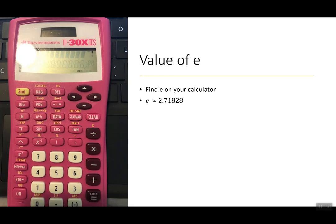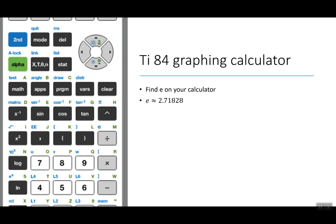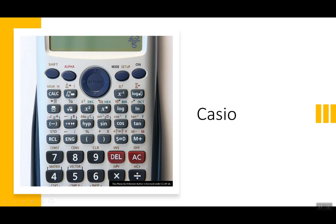I'm pulling up a few different calculators to show you where e is located. On the TI-30 X2S, it's the third button down in the first column, above the LN button — labeled e to the x. On a graphing calculator, it's also in the first column, farther down, again as the second function of LN. On the Casio it's on the right side, also related to LN. It's always shown as e to something or e to the x.